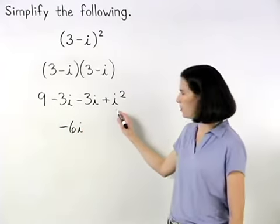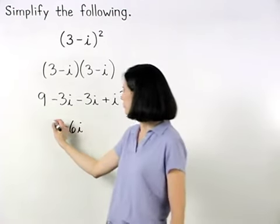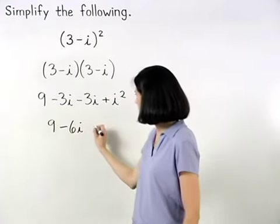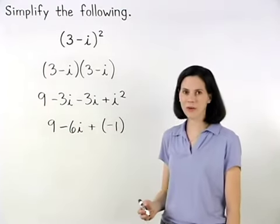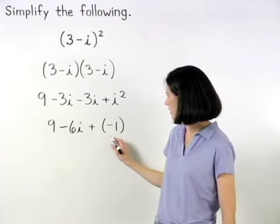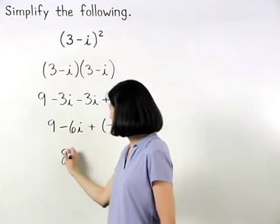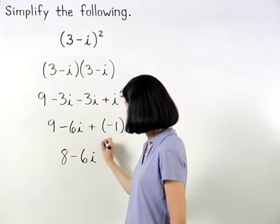And remember that i squared is negative 1. So we have 9 minus 6i plus negative 1. Finally, combining like terms, 9 plus negative 1 is 8. So our final answer is 8 minus 6i.